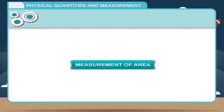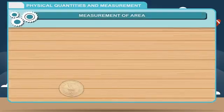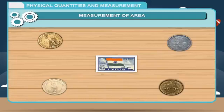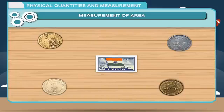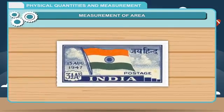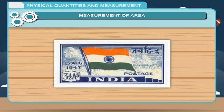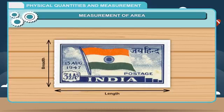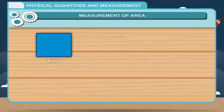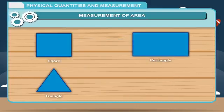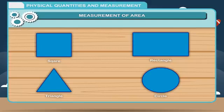Measurement of Area. The extent of the surface occupied by an object is called its area. Area is the region enclosed within the boundaries of a two-dimensional figure. A two-dimensional figure has only two dimensions, namely length and breadth. Squares, rectangles, triangles and circles are all examples of two-dimensional figures.